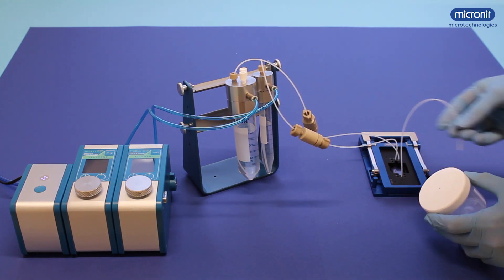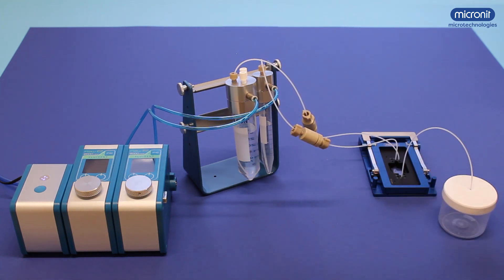All that is left is to connect the outlet tubing to the place you want the finished droplets to go. Now the setup is completely assembled. It's time to turn it on.